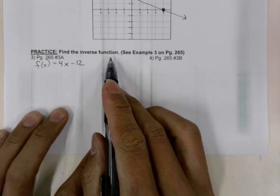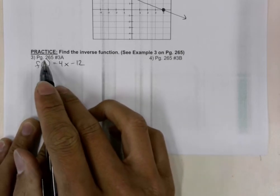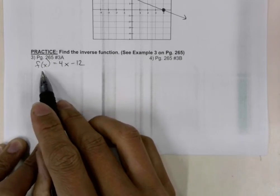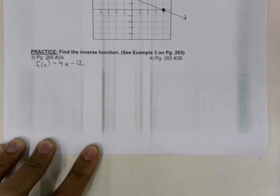Find the inverse function. On page 265, problem 3a, we have f of x is equal to 4x minus 12.